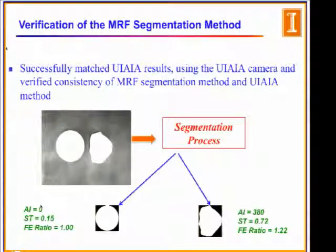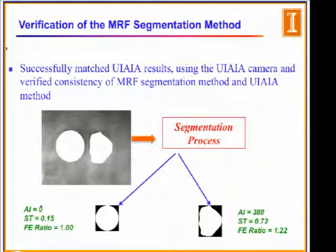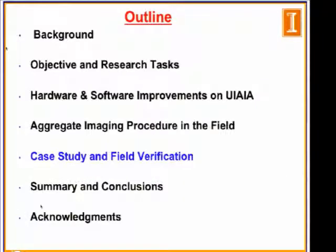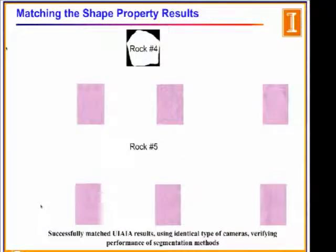Before implementing this method in the field, we had to validate it gives the same values as our image analyzer. We took an image of a rock and calibration ball with our machine's camera, applied the segmentation process, calculated shape properties, and compared results. We were able to record the same values with both methods.